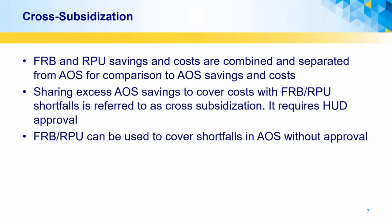To determine the cross-subsidization opportunities, the FRB and RPU savings and costs are combined. They are then separated from the add-on subsidy savings and costs, and ratios are used to determine excess savings and which incentive creates the limiting condition. Sharing excess add-on subsidy savings to cover costs with FRB-RPU shortfalls is referred to as cross-subsidization, and it requires HUD approval. Additionally, FRB-RPU can be used to cover shortfalls in add-on subsidy, and this can always be done without requiring HUD approval.